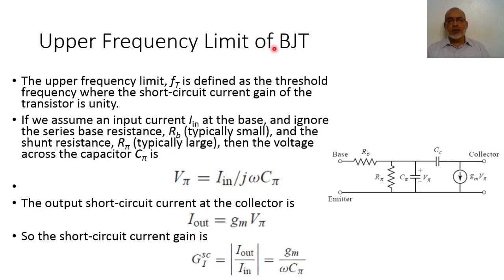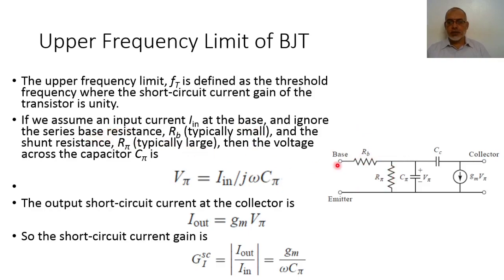The upper frequency limit of the bipolar junction transistor is determined by a frequency called the threshold frequency, at which the current gain of the two-port network is unity. Assuming input current I_in at the base and ignoring series resistance Rb and shunt resistance Rpi, the voltage at the base Vpi equals the input current multiplied by the reactance of the capacitor, which is 1 over jωCpi.